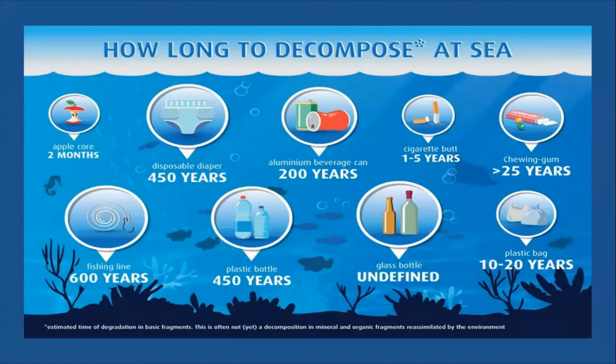That's a very long time. As shown on the slide, an apple core takes two months to decompose, a plastic bag takes 10 to 20 years, and a fishing line takes up to 600 years to decompose — even longer than plastic bottles. That's a lot of time for something to take to break down in the environment. Remember that we use plastics in everyday life — we use them for everything.